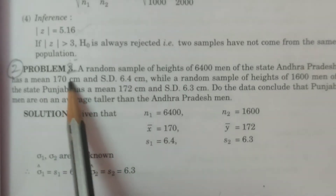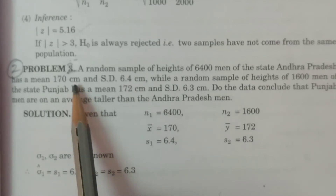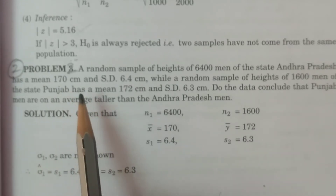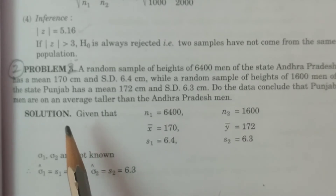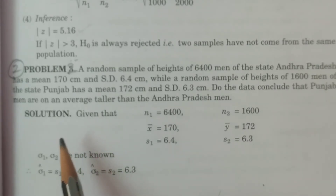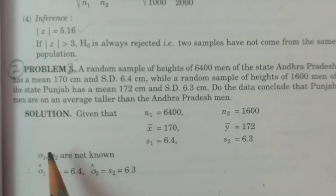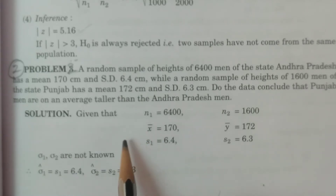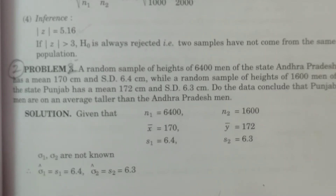Consider problem number two. I have previously explained a case where sigma one equals sigma two equals sigma — that is, the sigma known case. In this problem, I consider another case where sigma one and sigma two are two particular population standard deviations which are not known.